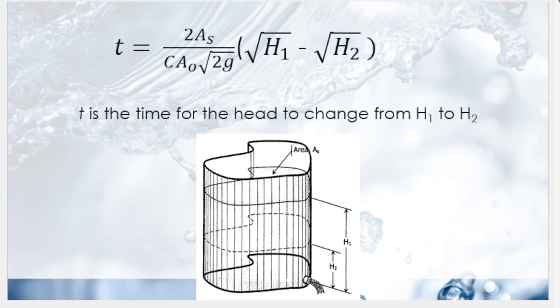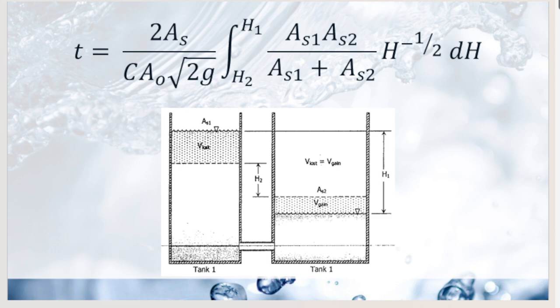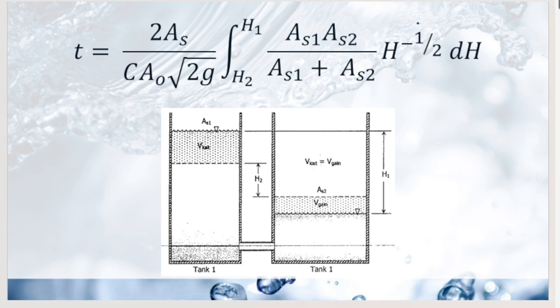Weirs have been commonly used to measure the flow of water but are now being adapted to measure other liquids. The classification of weirs includes rectangular, triangular, trapezoidal, circular, and parabolic. In hydraulics problems, the most commonly used are rectangular, triangular, and trapezoidal. Circular and parabolic weirs involve differential equations or integration.